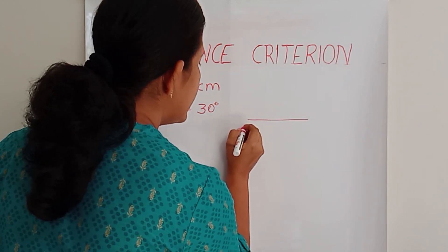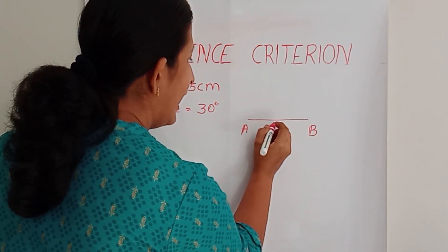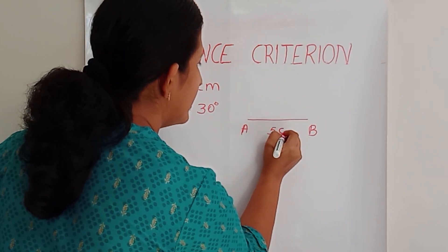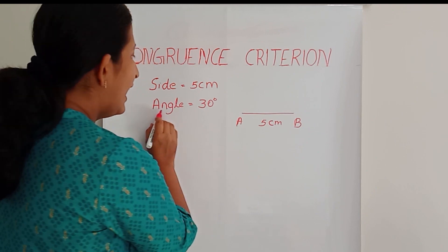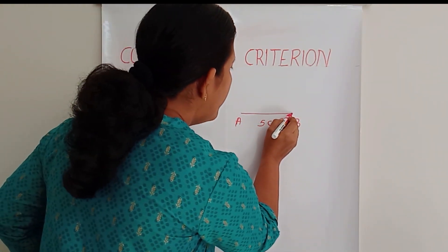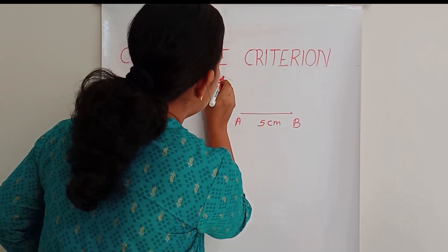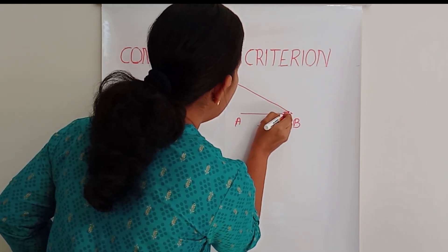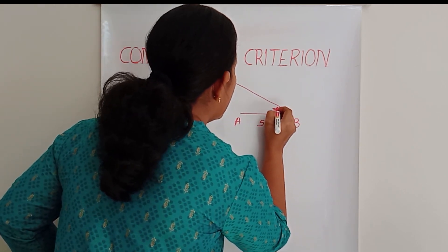So see, this is AB. And this is 5 cm. And one angle is 30 degrees. So Anna is going to measure 30 degrees over here. And she drew the line like this. So this is 30 degrees.